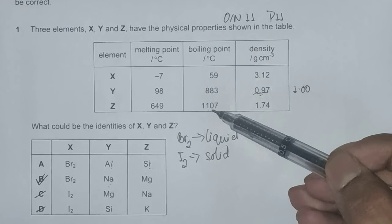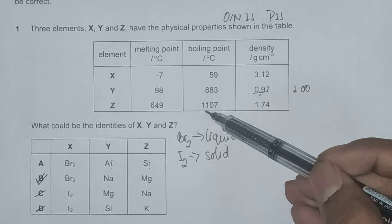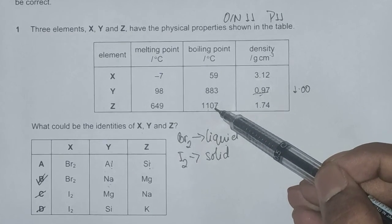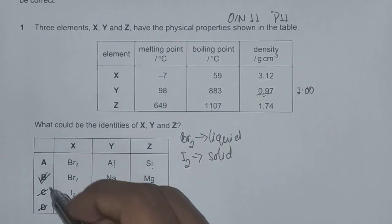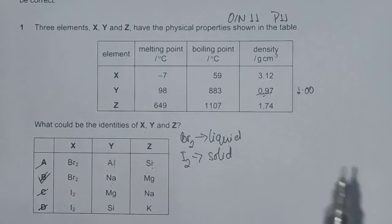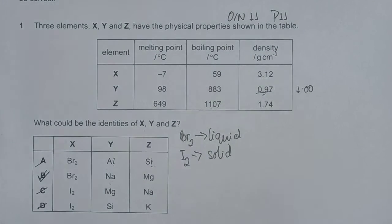But Z only has a boiling point of 1,107 degrees Celsius, so this would also eliminate option A, reducing down only to B, making B the correct answer.